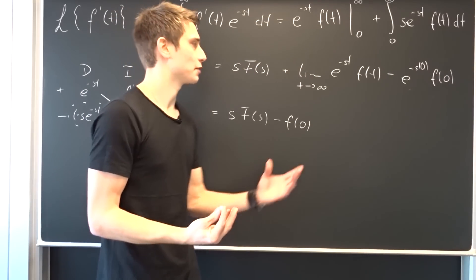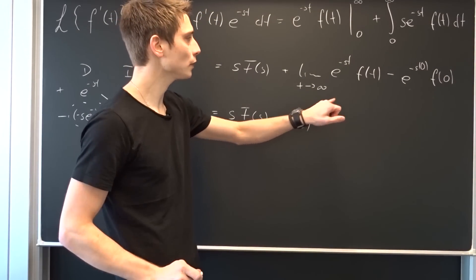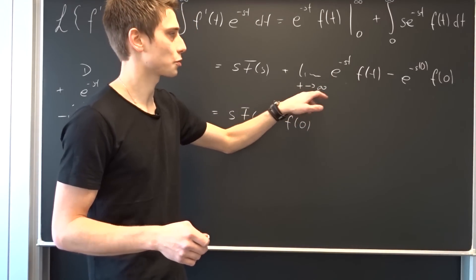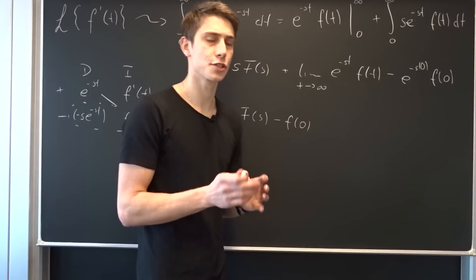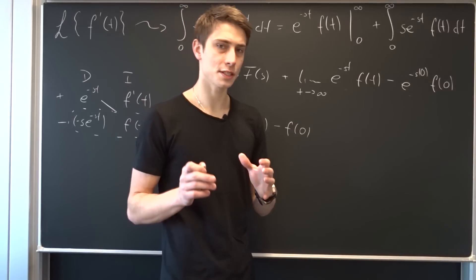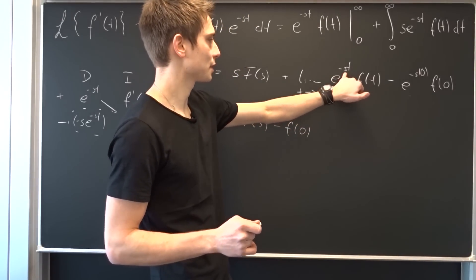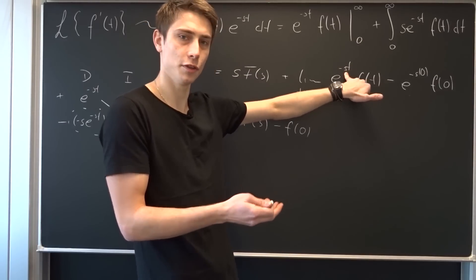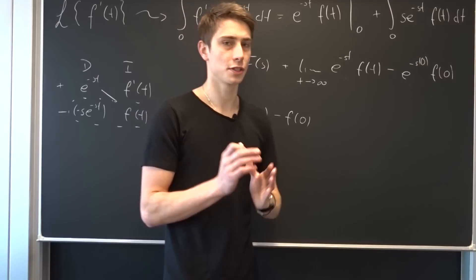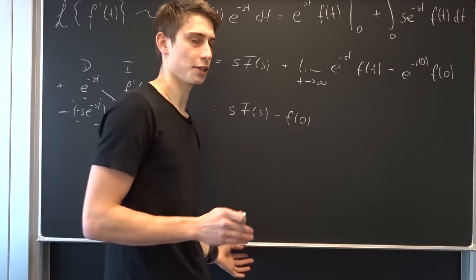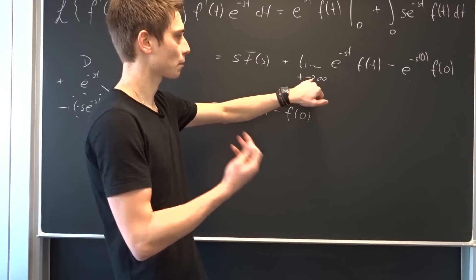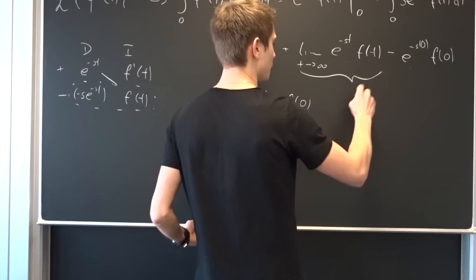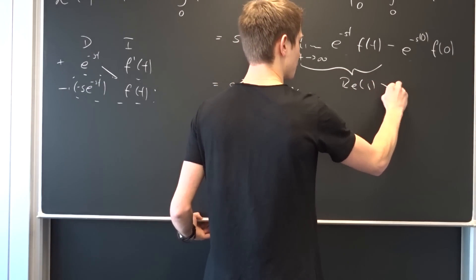Now as always we have to take a look at the convergence of this whole thing. Under which condition does this term converge? As we let t approach infinity, the real part of s should be greater than zero. If this condition holds, then we have a negative exponent, so that's one over e to the infinity, which is one over infinity, and this is just zero. So this whole thing converges under the condition that the real part of s is greater than zero.